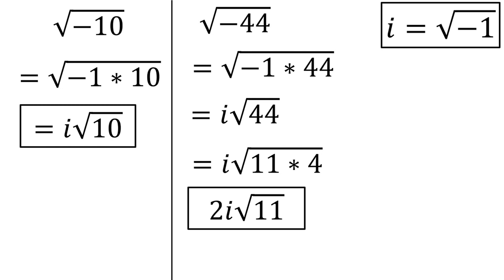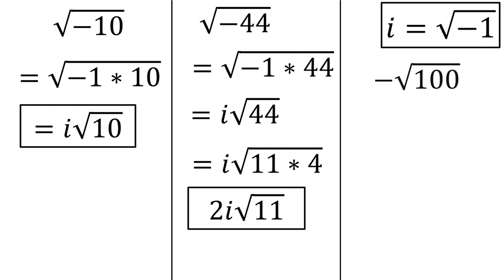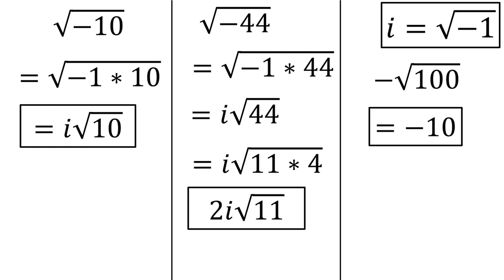Now don't get confused. Something like negative square root of 100 is not an imaginary number. The negative sign needs to be inside the square root for us to need to involve i. The square root of 100 is just 10, so this simplifies to negative 10.